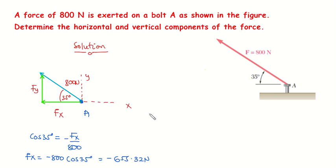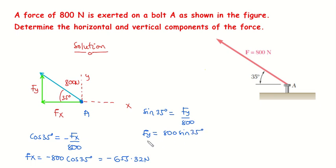For the Y component, you take sine of the 35 degree angle, which equals the opposite side FY over the hypotenuse 800. So FY equals 800 multiplied by sine of 35 degrees, giving us a value of 458.86 Newtons. This is positive because the vertical component points in the positive Y axis direction.